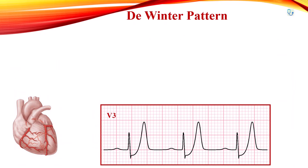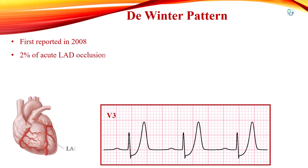The DeWinter EKG pattern was first reported in a case series by Dr. Robert DeWinter in 2008. This EKG pattern is uncommon, seen in patients with acute ischemic chest pain, and found in 2% of acute left anterior descending coronary artery occlusion.